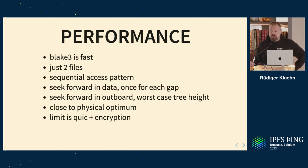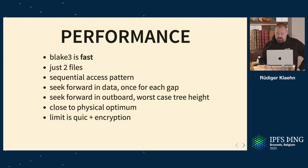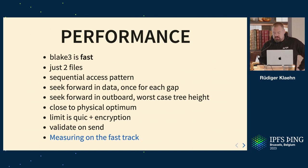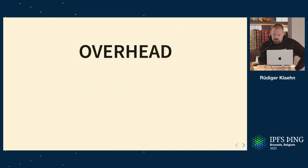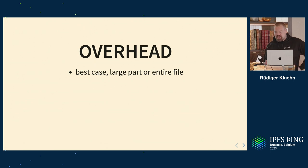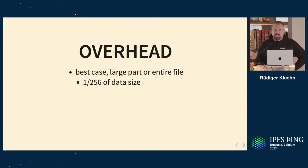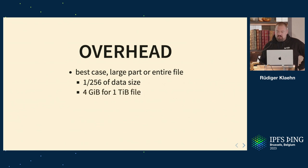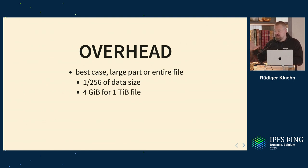Currently our performance limit is QUIC and encryption — the actual transfer itself. The computation is almost free. We can validate on send because it's so cheap. There's another talk called 'Measuring on the Fast Track' with performance numbers. Regarding overhead: the best case is a giant file requested all at once — overhead is 1/256 of the data size. For a one-terabyte file, that's four gigabytes of overhead, consisting entirely of hashes — no headers, just hashes and data.